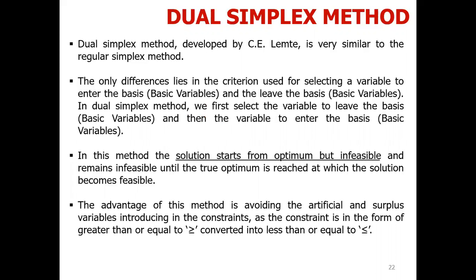In the maximization cases, we said that we will use the greedy rules. So whichever was the largest value of the CJ value, it was our pivot column, and then we had ratios, which was the lowest value of the leaving variable. But here, in the dual simplex method, the first decision is the leaving variable.